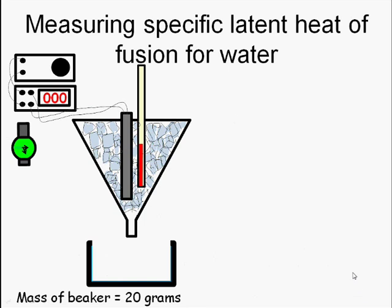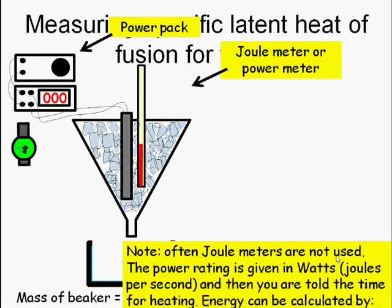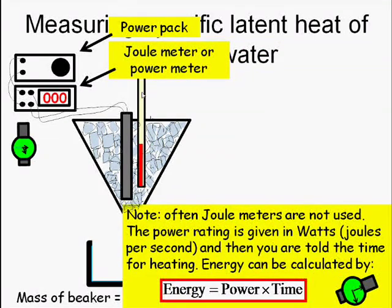Let's have a look at how we measure the specific latent heat of fusion for water. We start with similar materials to what we had before when we were looking at specific heat capacity, a power pack, a joule meter or a power meter. Remember that we don't always use joule meters, that we can use a power meter, but if we use a power meter, we must use the power equation to calculate the energy we put in. So we also need to know the time.